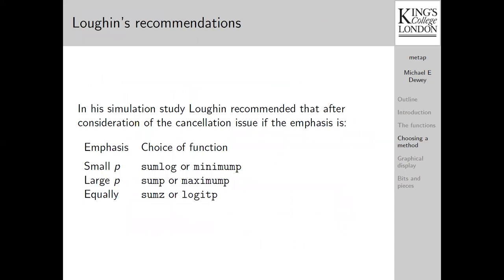Now, Lochin carried out a simulation study, and although he didn't include all of the methods which are in MetaP, his suggestion was after you've considered the cancellation issue, because obviously you don't want a method that cancels if that isn't what you wanted to do, and similarly, you don't want a method that does if you don't. He suggests that if the emphasis is to be placed on the very small p values, then you want to use Fisher's method or Tippett's method. If your emphasis is on the large p values, then you want to use Edgington's method or the maximum p method. If you are interested equally in all sizes of p, then you should use Stouffer's method or the logit p method. He in fact recommends the overall logit p is probably as good as anything.